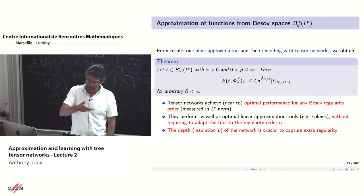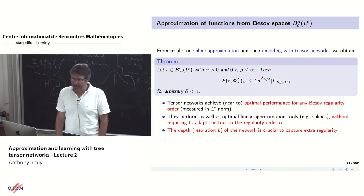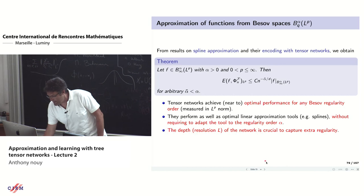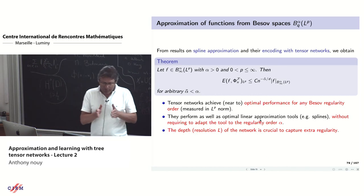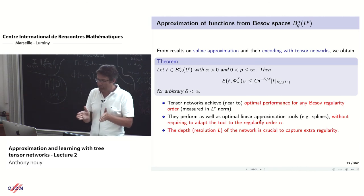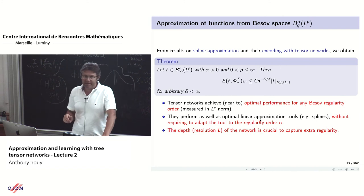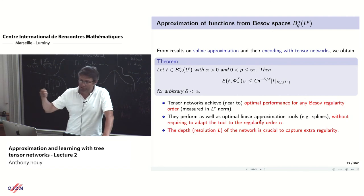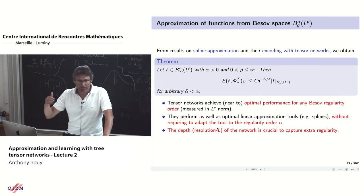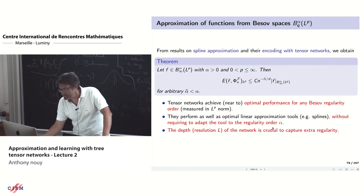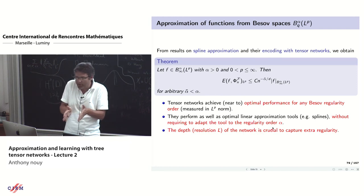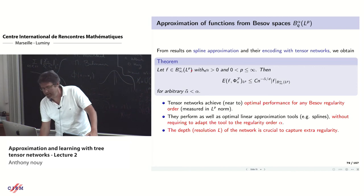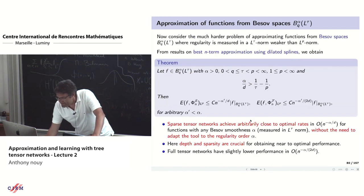Even using piecewise constant approximation, the near-optimal complexity is due to the freedom we have in the resolution: letting the resolution grow is crucial to capturing extra regularity. Using piecewise constant approximation, you are able to achieve what is obtained by splines of degree related to the regularity alpha. A similar result is obtained for a wider class of Besov spaces where the same alpha regularity is measured in a weaker norm L^tau with tau less than p.